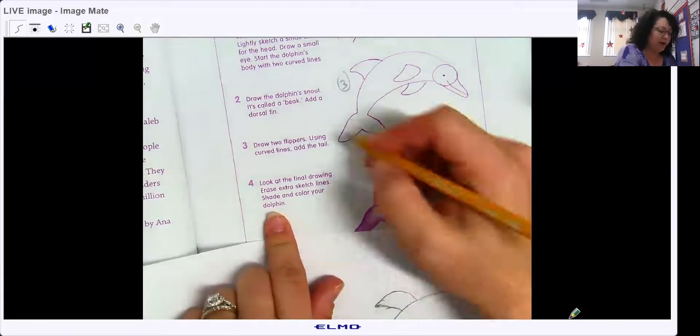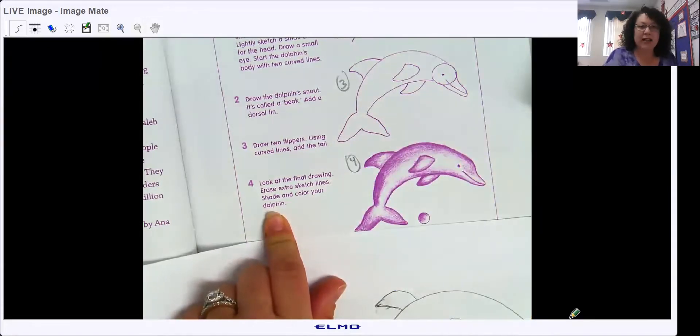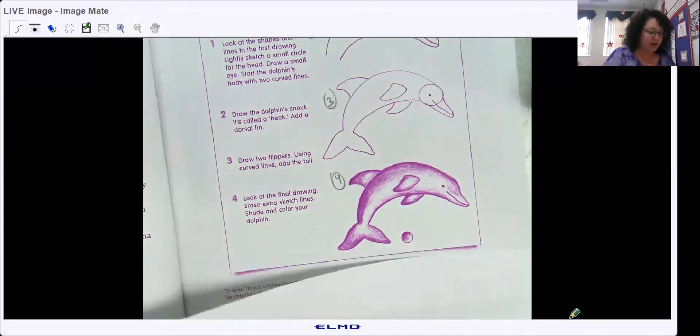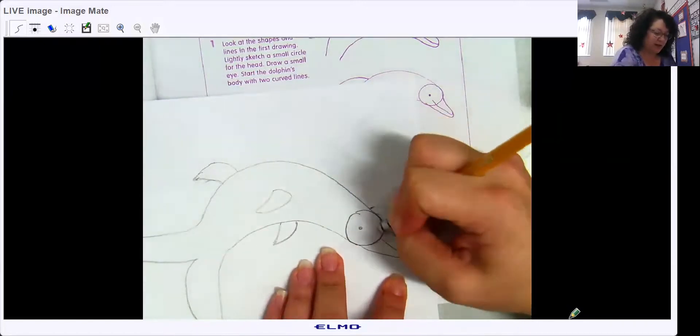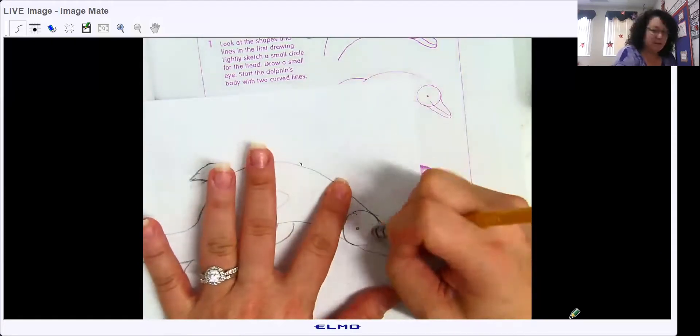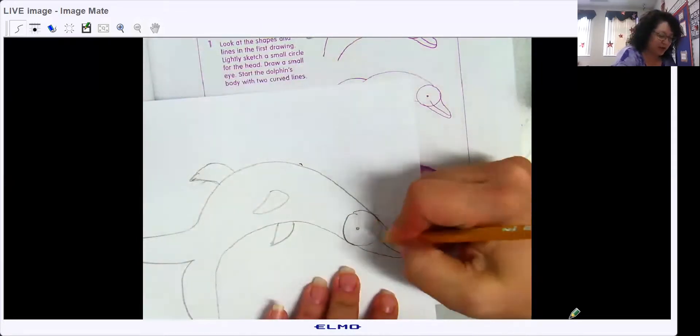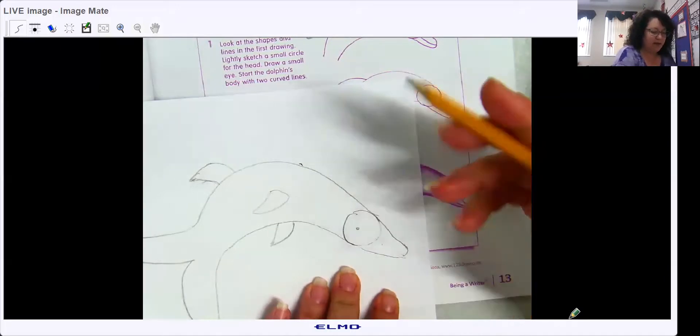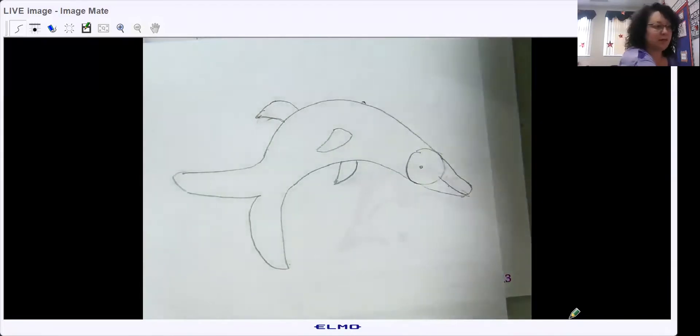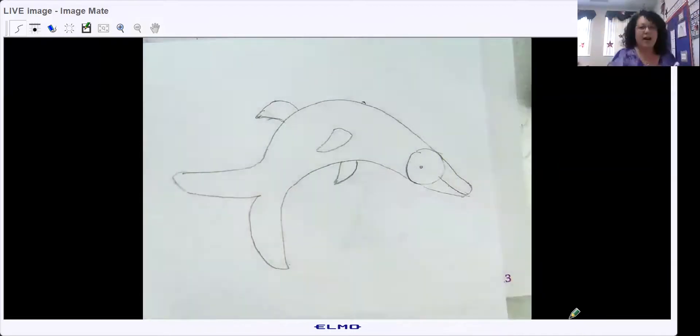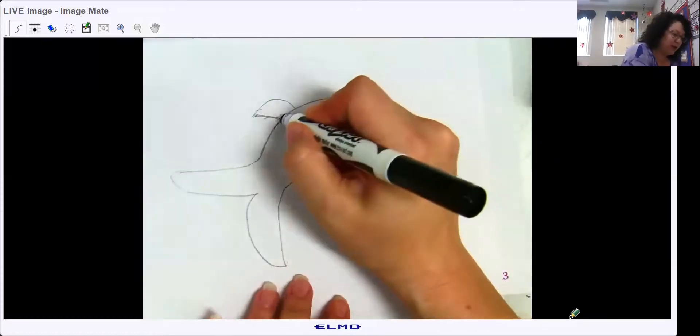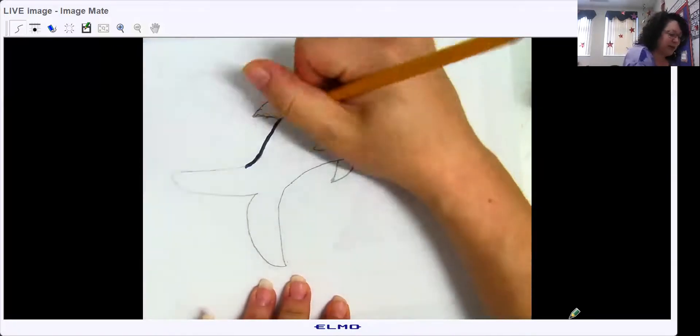And then step four says look at the final drawing, erase extra sketch lines, shade and color your dolphin. So I'm going to erase the circle line there. But again you can still see mine because I was pushing hard. However if you didn't see the lines it would look a lot better. Then you can color it. Now you know what I like to do, I always like to outline in marker and color and crayon. Your picture, you do what you want to do. So then I would also erase those lines.